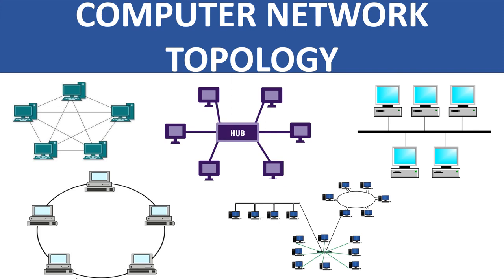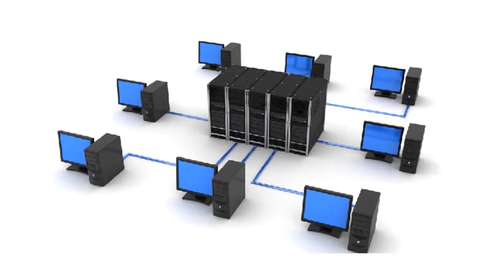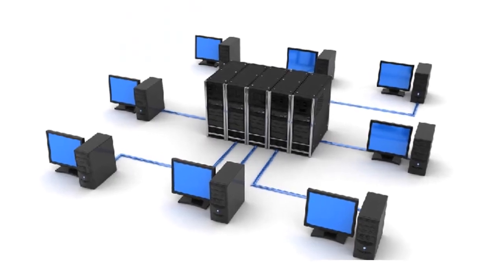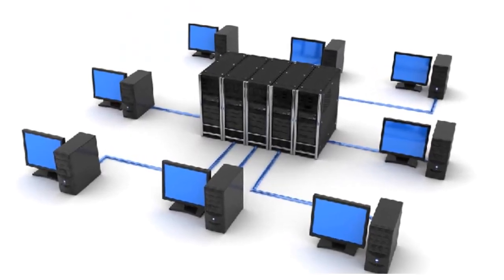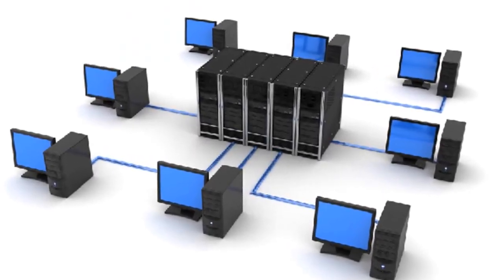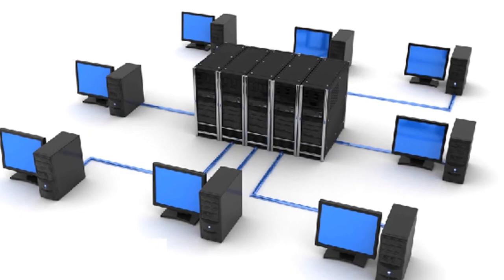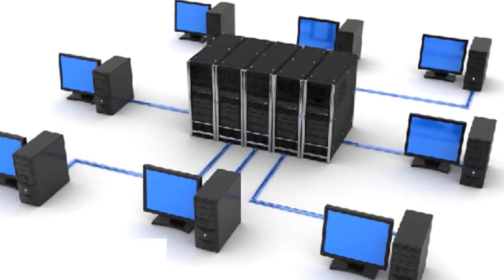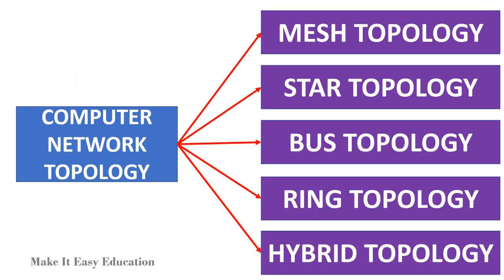Computer network topology. The arrangement of networks that represents how the computers are connected to each other is known as topology. There are five types of topology: mesh topology, star topology, bus topology, ring topology, and hybrid topology.